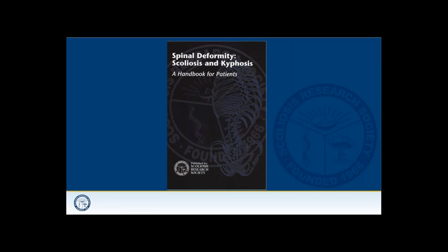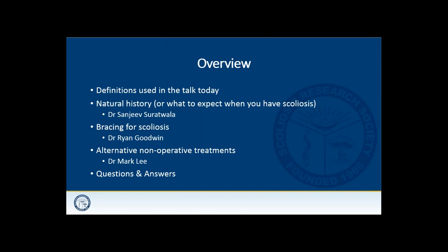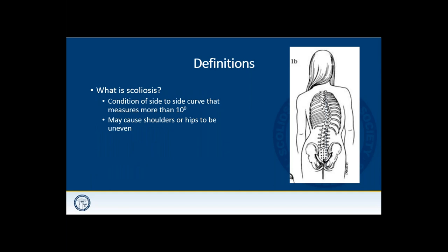These are some of the handbooks put out by the Society over the years, including a recent general handbook on spinal deformity for scoliosis and kyphosis. These may be available through your treating physician's office, and copies are available in PDF format online for download. A lot of the information I'm talking about today comes directly through the website and these brochures. I'll start with definitions, then talk about the natural history, followed by my colleagues discussing bracing and alternative non-operative treatments, and then a question and answer session.